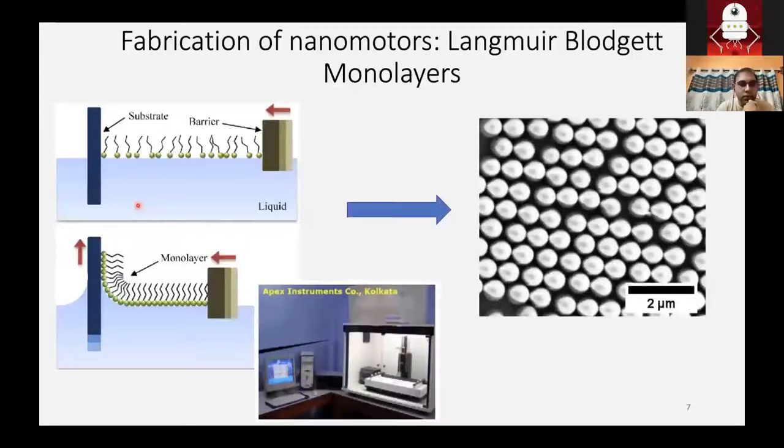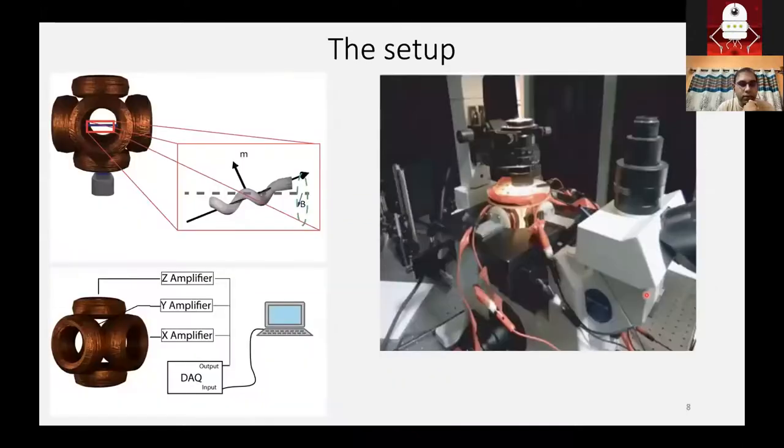The way we create monolayers, that is the seed layer, is by using something called Langmuir Blodgett system where we disperse polystyrene beads and then we extract the substrate. We push the substrate and that creates monolayers. It's done in an instrument like this. This is the setup. It's a very general and easy setup where we have a triaxial Helmholtz coil. The coil is being driven by amplifiers, is controlled by a DAC and which is controlled by a computer.